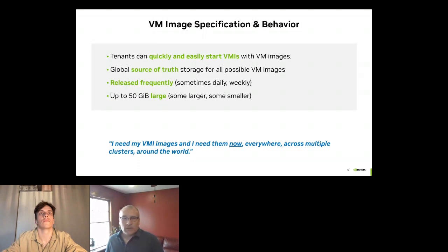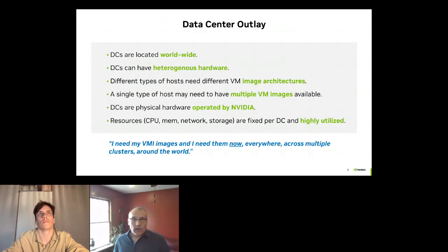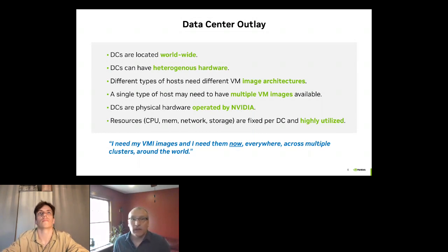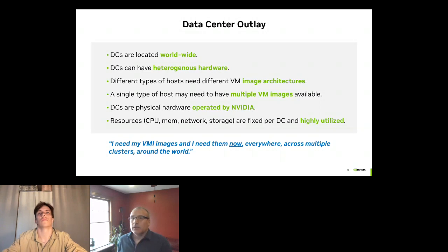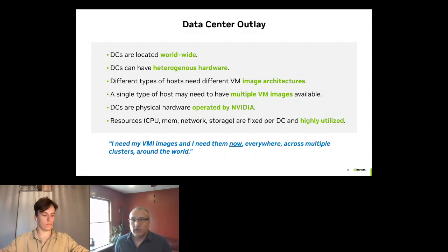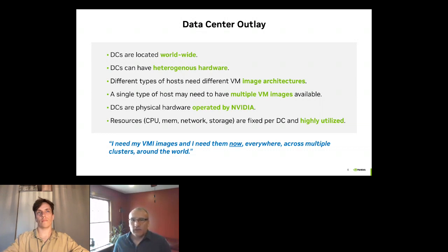We have data centers located around the world. While we do have good practices around hardware versioning, at this scale you always need to be able to handle heterogeneous hardware. We have some applications specific to CPU architecture, so we need to handle different types of image builds based on CPU architecture. Any given host in our data center typically needs to be ready to launch multiple different VM images at any given point in time. These data centers represent physical hardware that we operate at NVIDIA. Resources such as CPU, memory, network, and storage can be a challenge — these are fixed assets per data center, and we pack them pretty tightly.